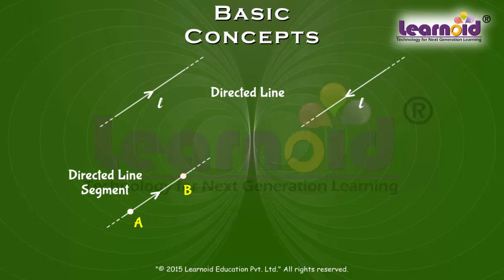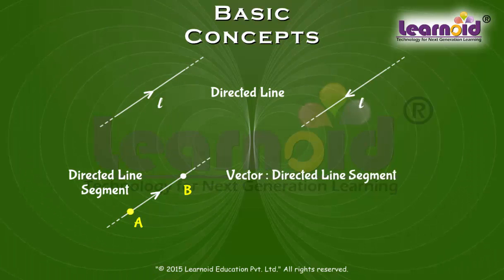A directed line segment is a vector denoted as AB arrow or A arrow and read as vector AB or vector A.